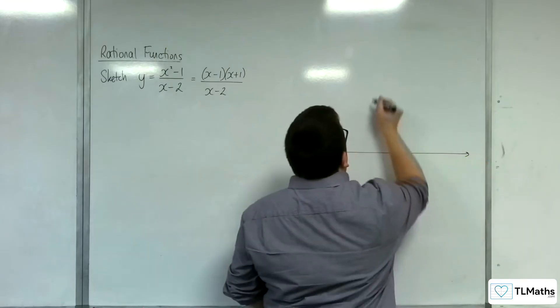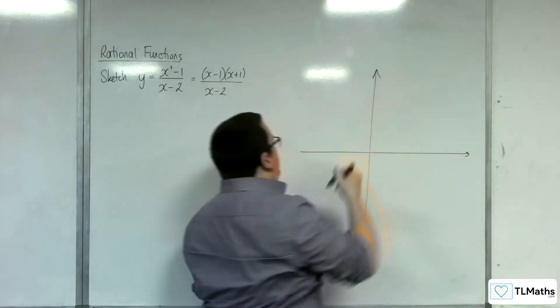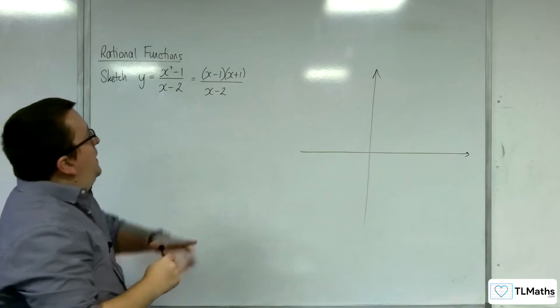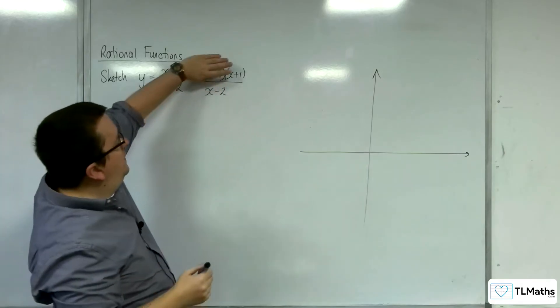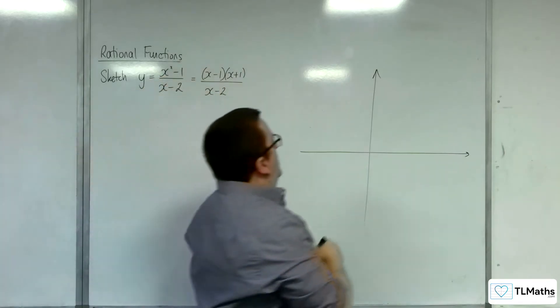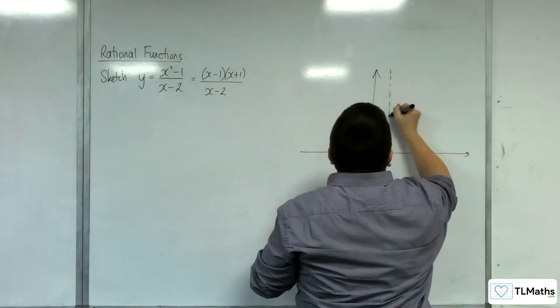Let's draw some axes. First of all, vertical asymptotes, that's when the denominator is 0. So that's when x equals 2. So let's draw an x equals 2.